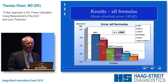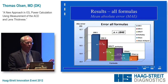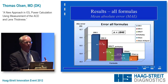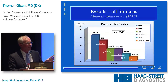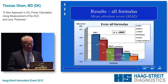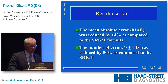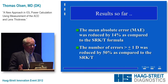Using information from the fellow eye: if the first eye comes up with a certain refractive error and I measure the IOL position in that eye, I can use this information for the second eye and get even higher accuracy. We can do very much better than the SRK-T — in this series, the number of errors greater than one diopter was reduced by 50%.